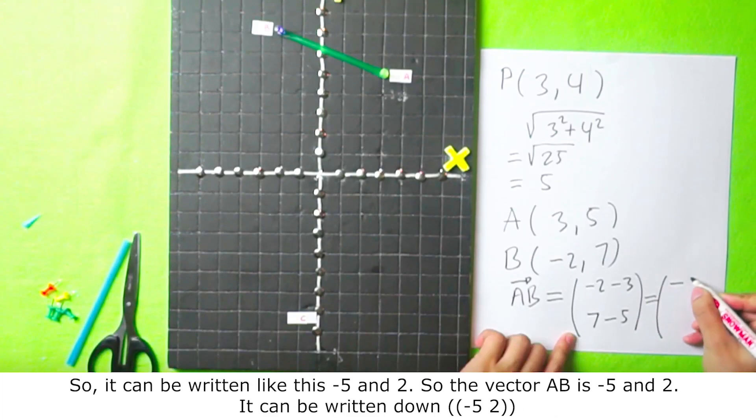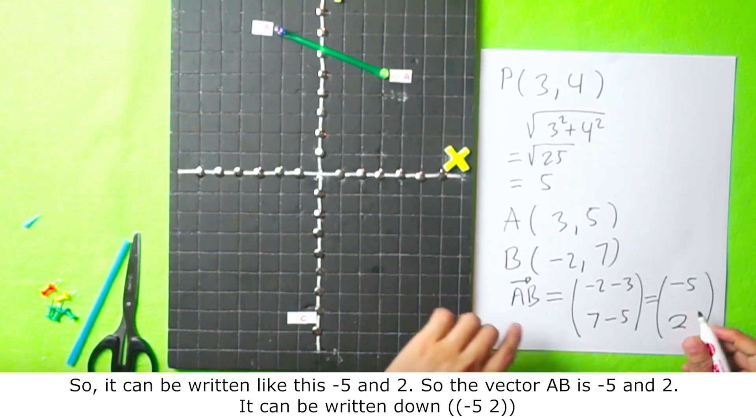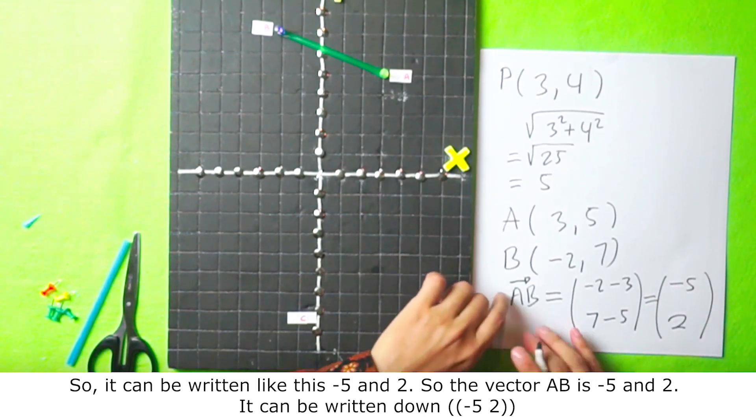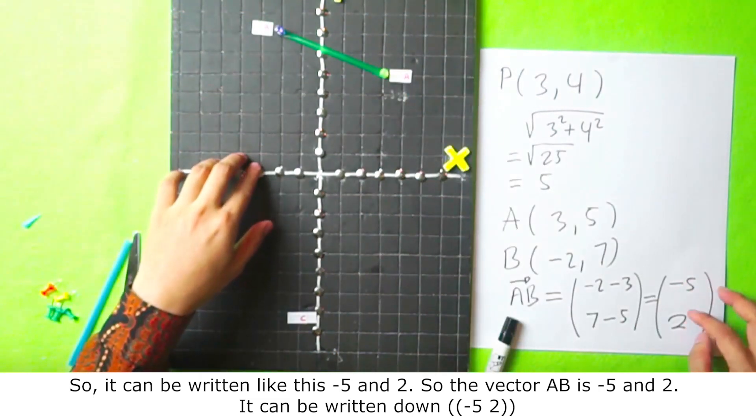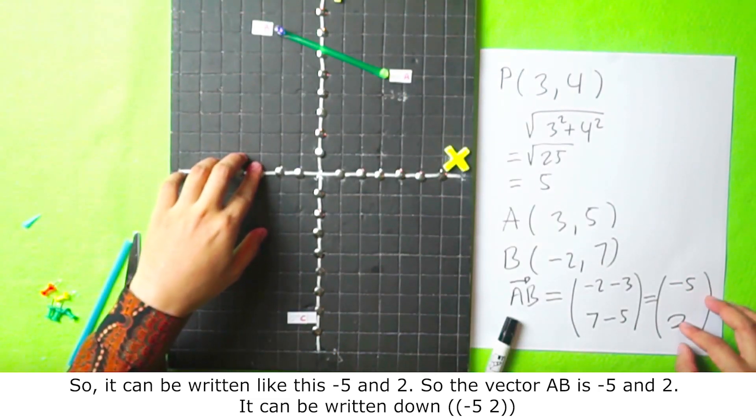So it can be written like this, negative 5 and 2. So the vector AB is negative 5 and 2. It can be written down negative 5, 2.